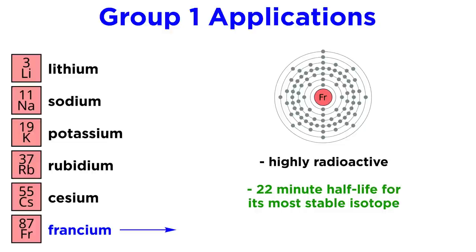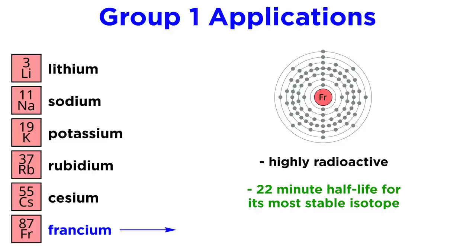Lastly, francium, as we mentioned, is highly radioactive, and with a 22-minute half-life for its most stable isotope, it has no practical applications. And with that, we wrap up our discussion of the first group on the periodic table, the alkali metals.